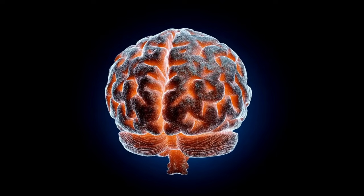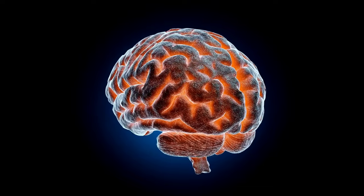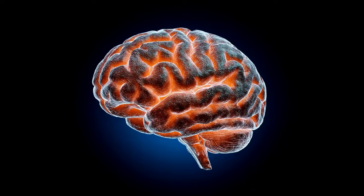The reticular activating system, or RAS, is a crucial part of the mammalian brain located in the brainstem. It's responsible for many vital functions, from our sleep-wake cycle to our heart's beating.